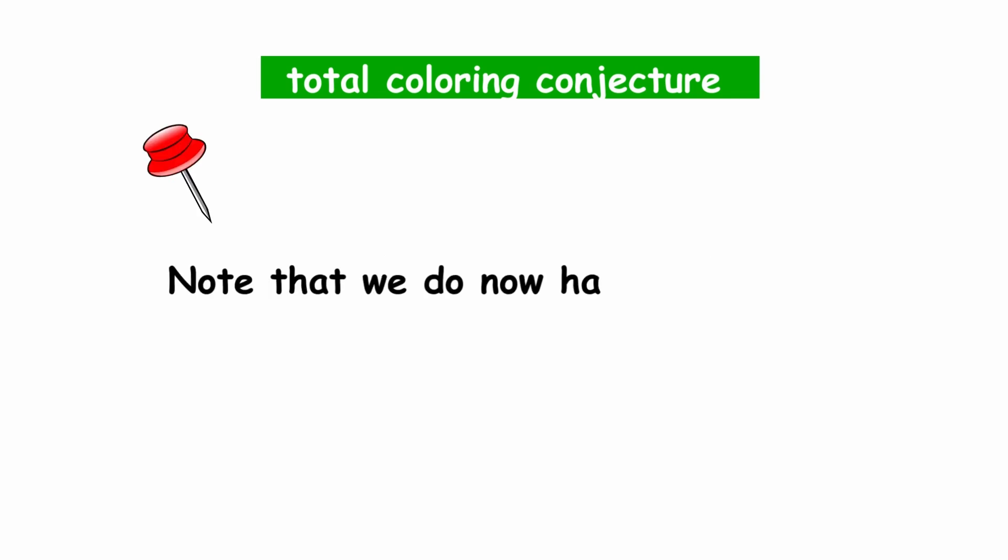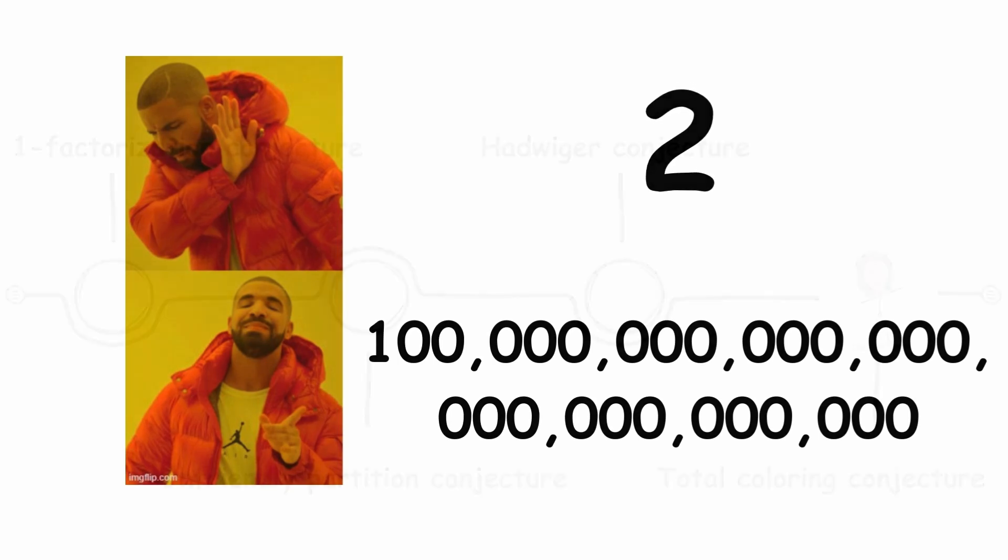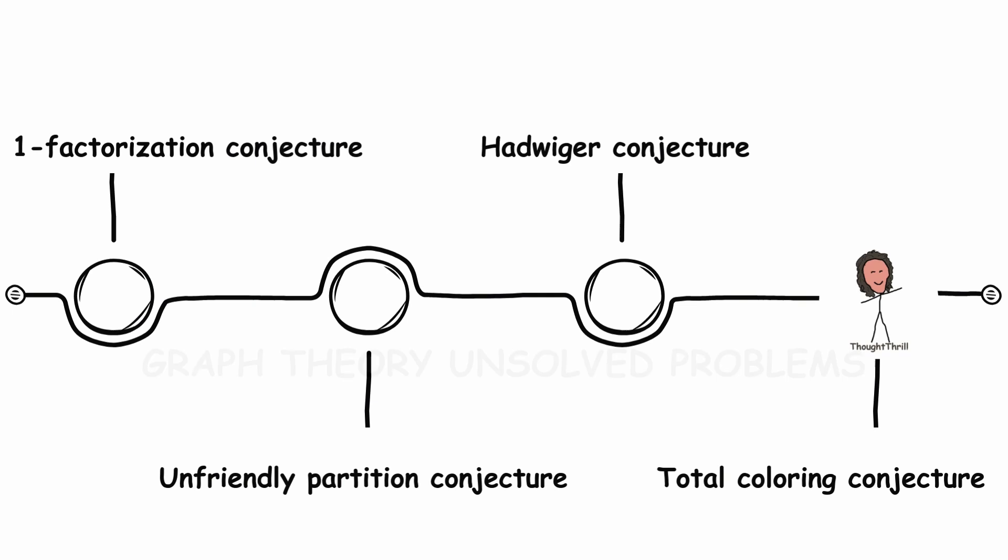Note that we do now have a proven upper bound of the form delta of g plus a constant. It's just that the constant is 100 septillion, not two. As you can see, there is probably some room for improvement.